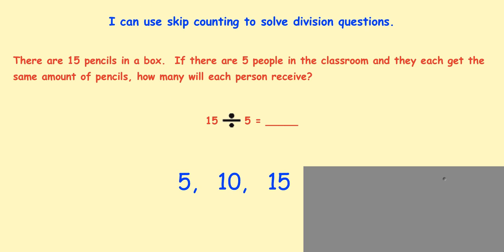So what we want to do now is we're going to need to count how many groups there are. So we have 1, 2, 3 groups. So therefore, we have 1, 2, 3. Therefore, 15 divided by 5 equals 3.